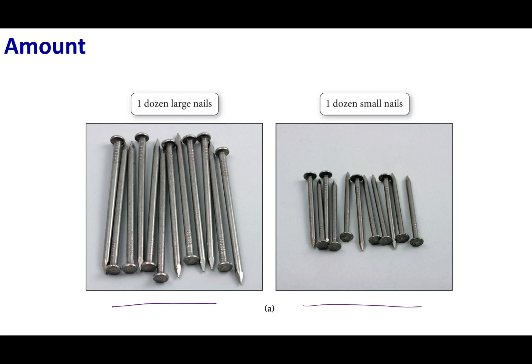If I asked you which one has the most space, well then you can say that the picture on the right hand side has more space because the small nails take up less space. So what we're discussing here is amounts and how we describe amounts in chemistry and in general in science.